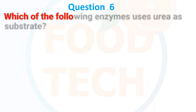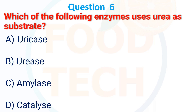Which of the following enzymes uses urea as a substrate? A. uricase, B. urease, C. amylases, D. catalyst. The answer is B, urease.